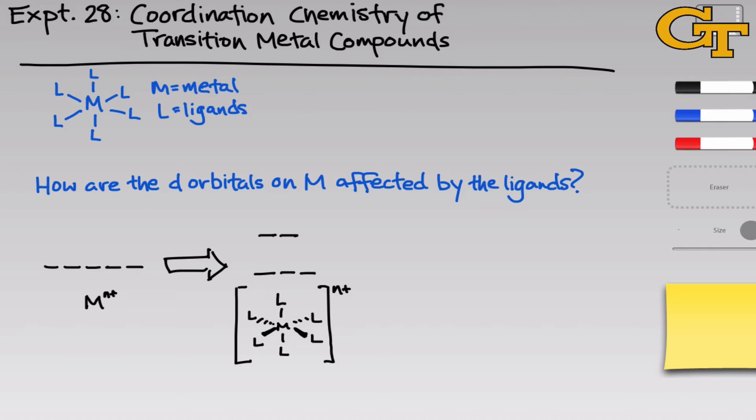What that causes is a splitting, or in fancy terminology, a perturbation of the d orbital energies. Some of them will go up in energy owing to anti-bonding effects, others will go down in energy owing to bonding effects. And again, I've left out the electrons, but in a real complex we would see these orbitals filled with electrons, except for d0 metals that don't have any electrons in their d orbitals.